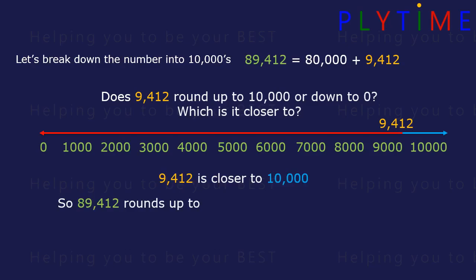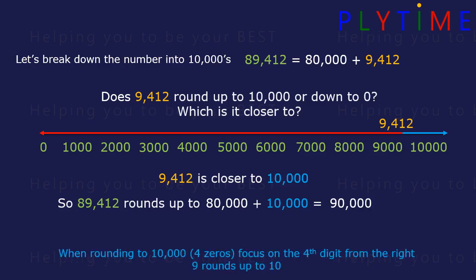89,412 rounds up to 80,000 plus 10,000, or 90,000. When we're rounding to 10,000 with four zeros we focus on the fourth digit from the right. Here the 9, and 9 rounds up to 10.